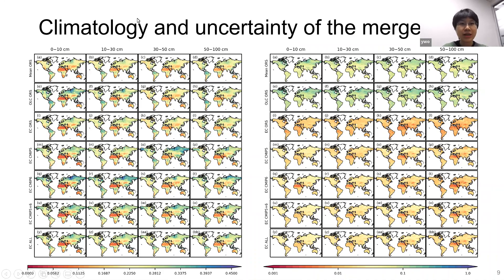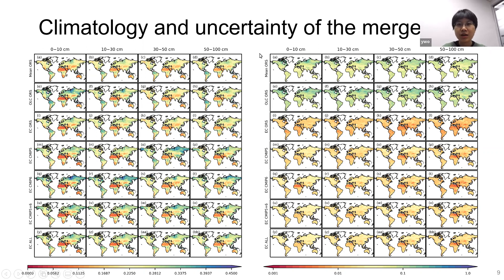This shows the climatology and uncertainty of the merged data. The climatology pattern differs somewhat across individual products, but all show the regional pattern of wet tropical forests and dry Sahara and Middle East regions. The uncertainty estimated by the emerging constraint method appears to underestimate uncertainty, whereas the unweighted average method shows more reasonable uncertainty.